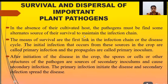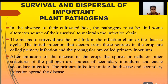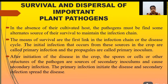Good morning students. Let's start our next lecture about survival and dispersal of important plant pathogens. In the absence of their cultivated host, the pathogen must find some alternate sources for survival to maintain the infection chain. The term survival here means being alive, and the pathogen chooses an alternate host to survive when the main crop is absent. Survival is the first link in the infection chain or disease cycle.